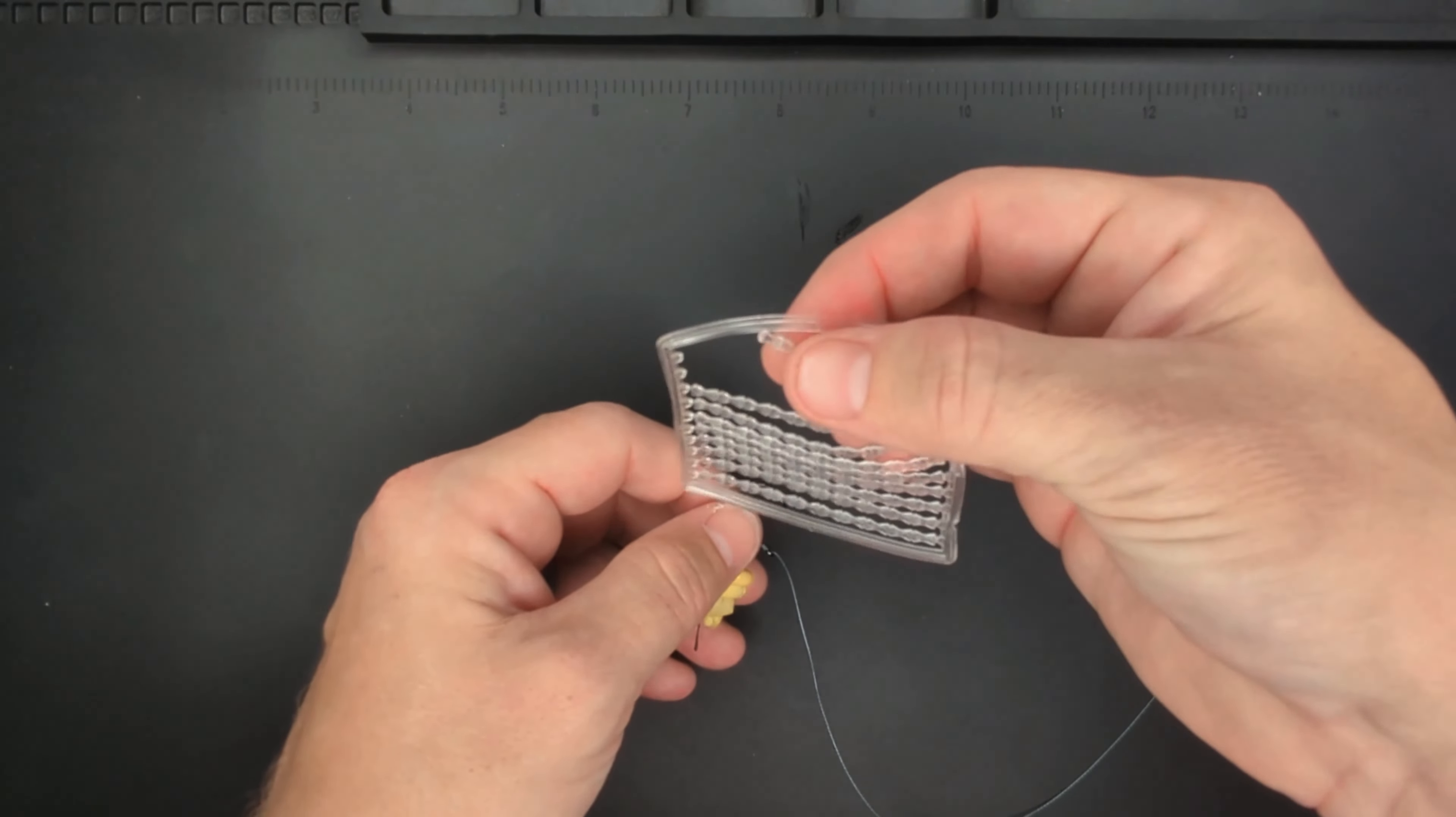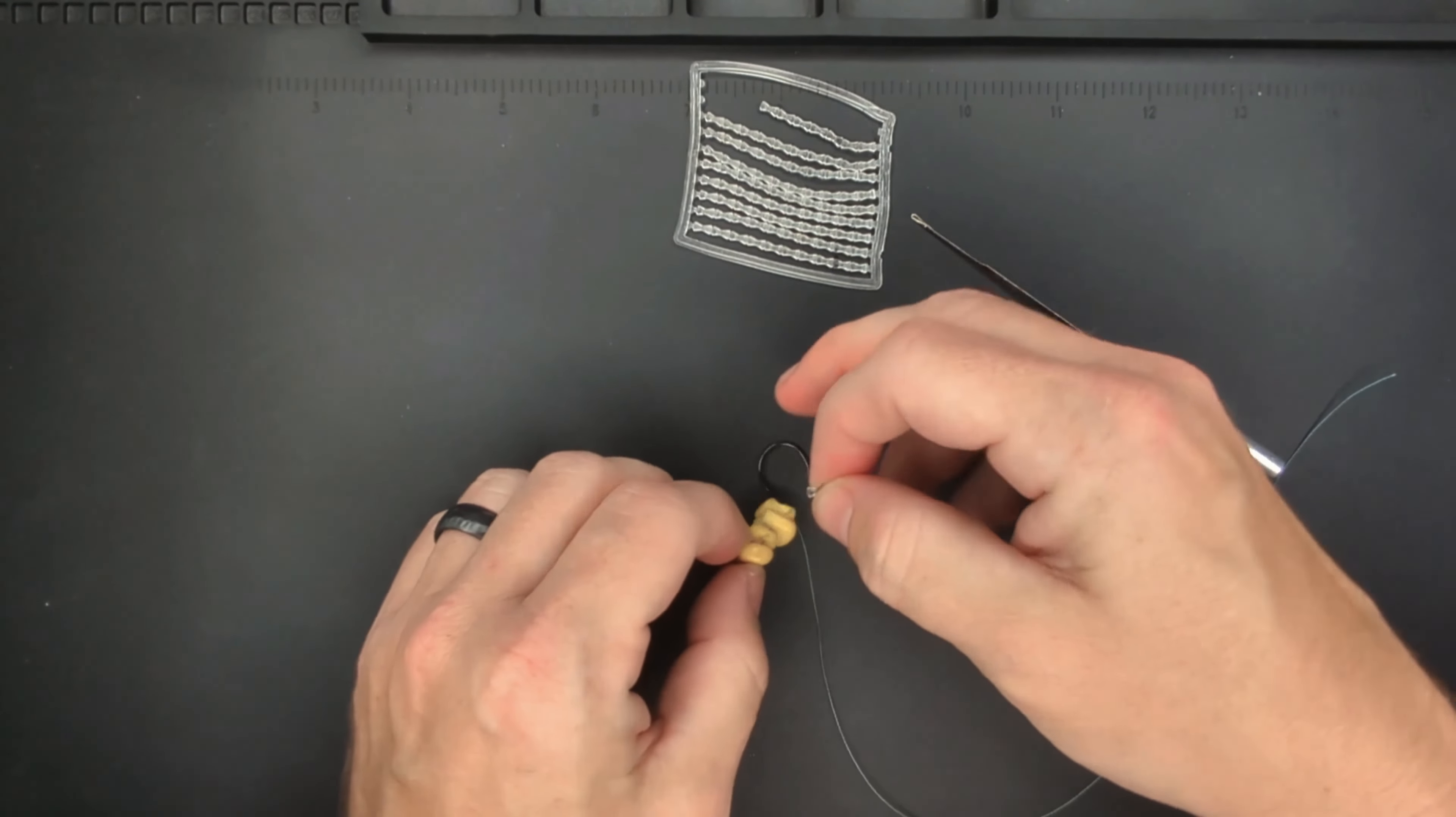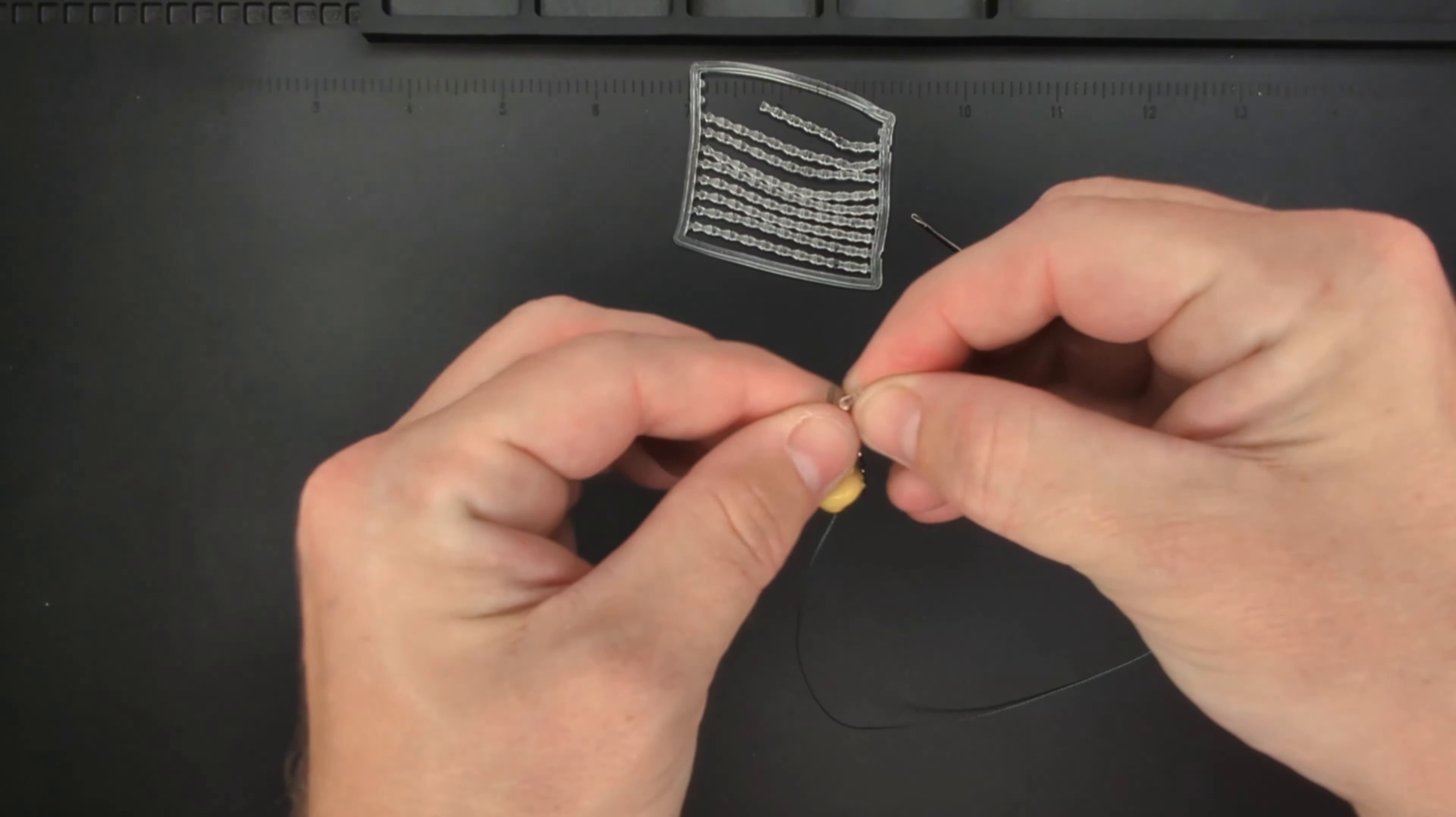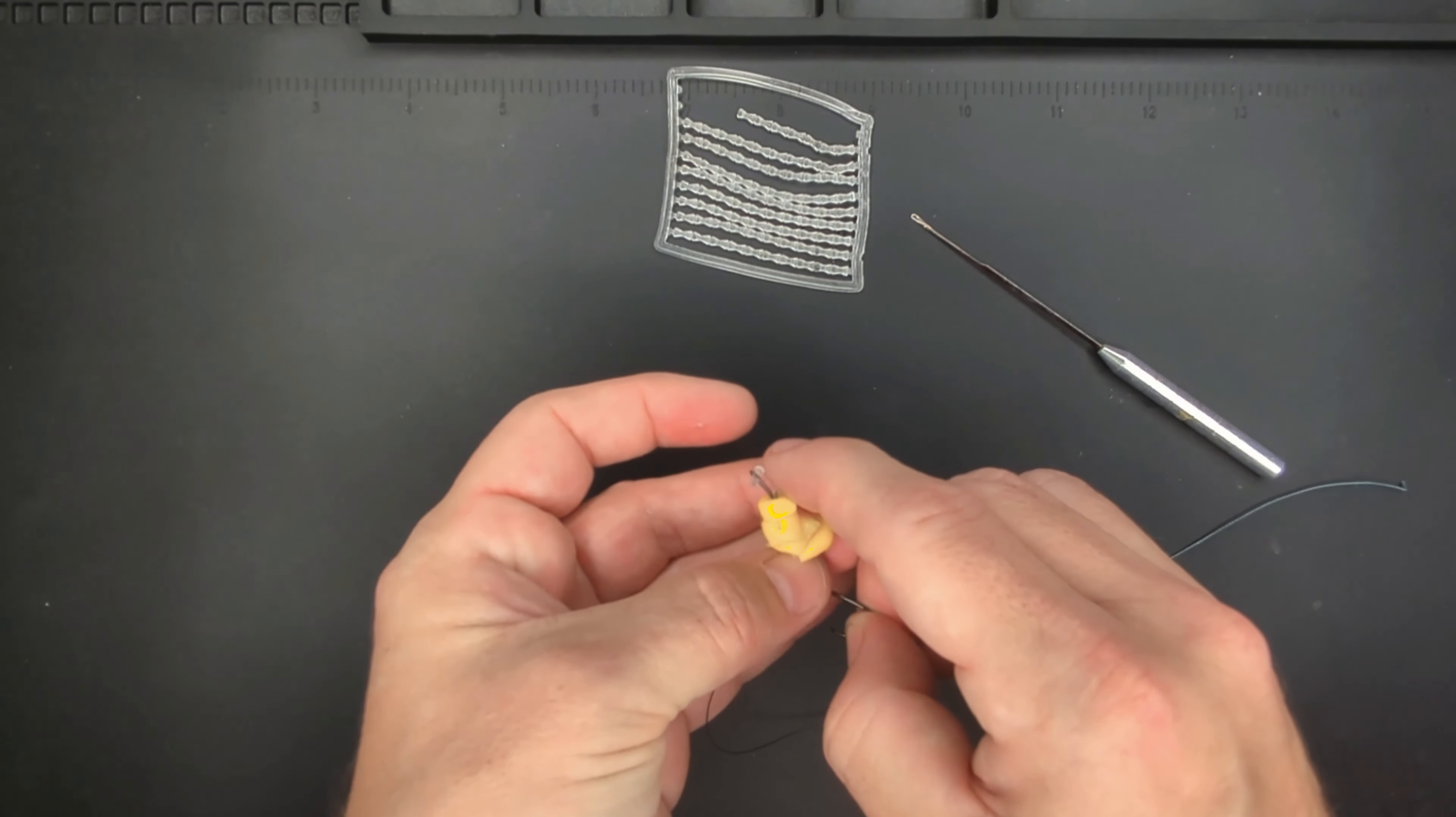Next you're going to want to take one of your bait keepers and you're going to put it in the eye of the loop, and then take your bait and push it up against the bait keeper.